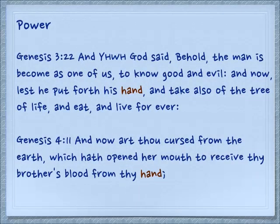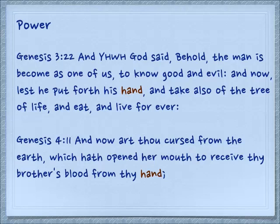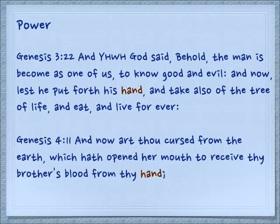One of the basic ideas behind Yad — behind your hand — is the power that you have. Genesis 3:22: 'And Jehovah God said, Behold, the man has become as one of us to know good and evil. And now, lest he put forth his hand and take also of the tree of life and eat and live forever' — Adam, you're out of here. The idea is that he has the power to pick this fruit. In Genesis 4:11: 'And now art thou cursed from the earth, which hath opened her mouth to receive thy brother's blood from thy hand' — speaking of Cain, he had slain his brother by his hand. He did it in his own power.